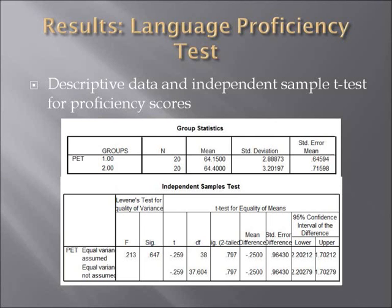Descriptive data and independent sample T-test for proficiency scores showed that there was no significant difference in scores for the control group (M = 64.15) and experimental group (M = 64.40), with P greater than 0.05.